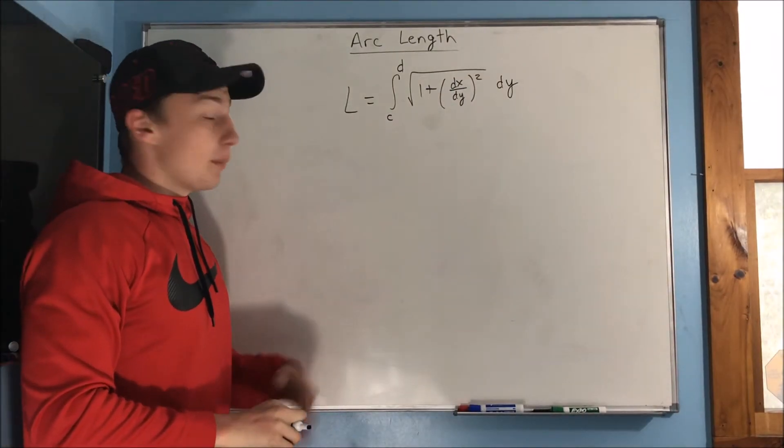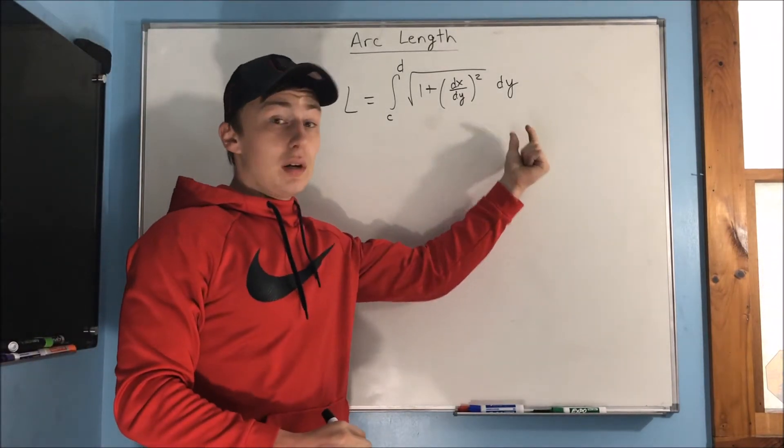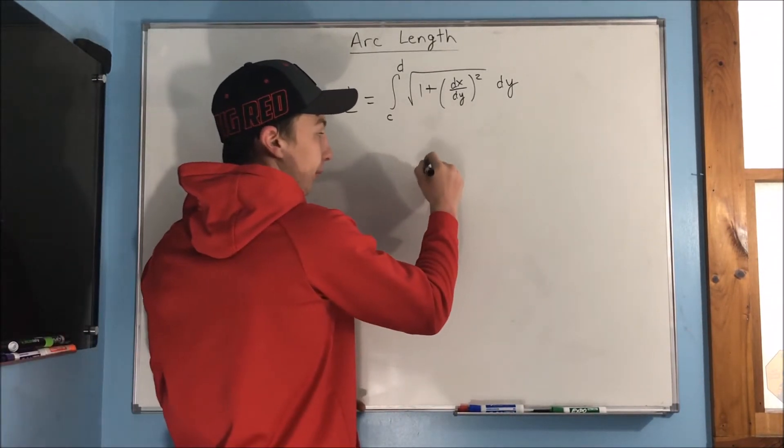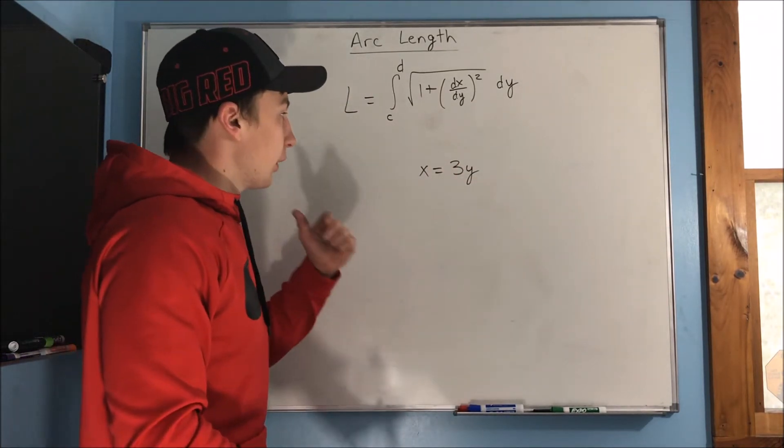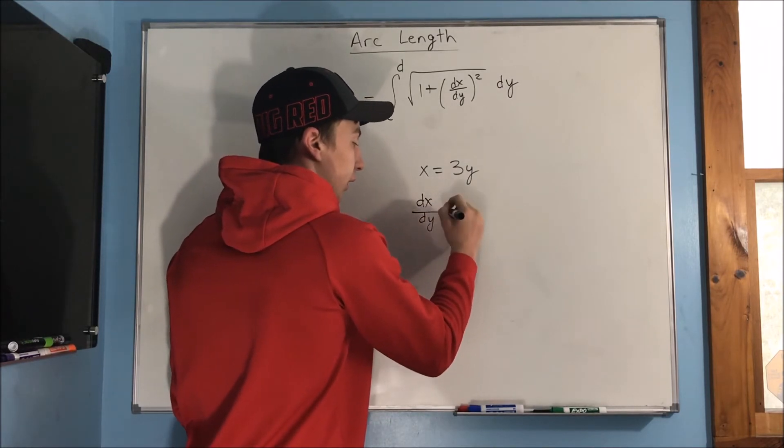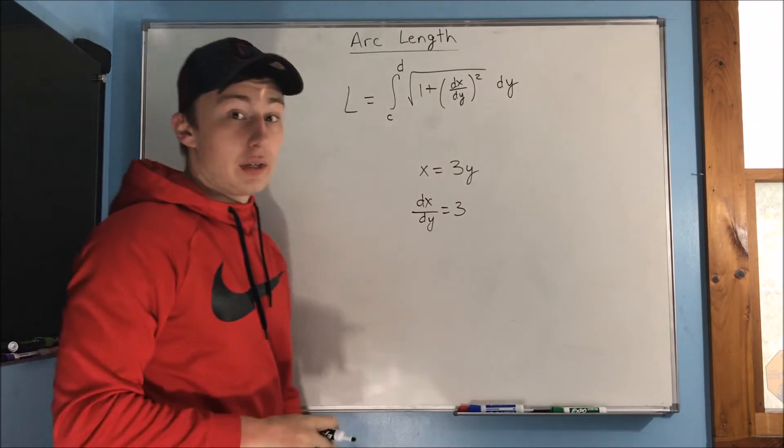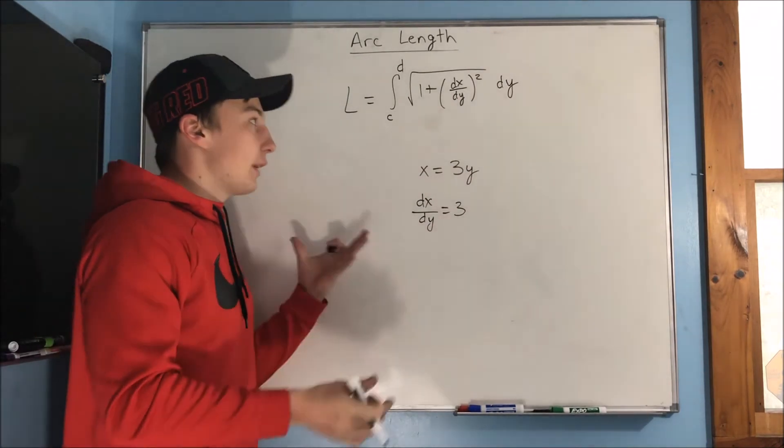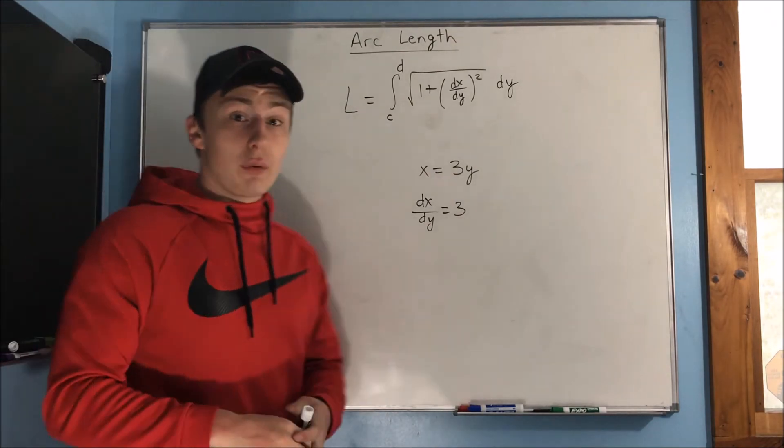Now the last thing I wanted to mention here is that you can also do the arc length formula with respect to y as well. So if you got like a curve that was x equals 3y instead, you can still take the derivative here. dx/dy equals 3, you square it to get 9, you can plug in 9 there, right. So that's something you can still do. Alright, and that's going to do it for this video.